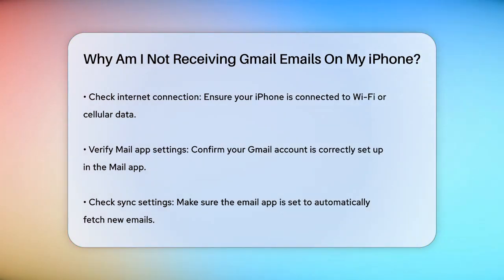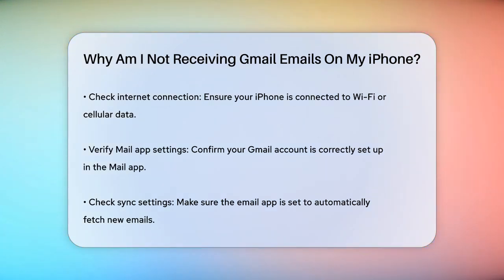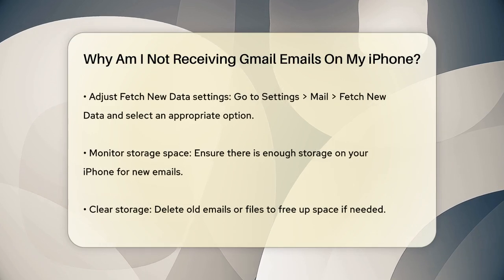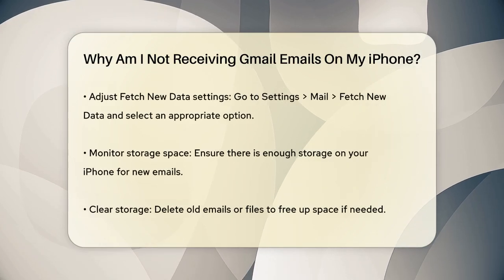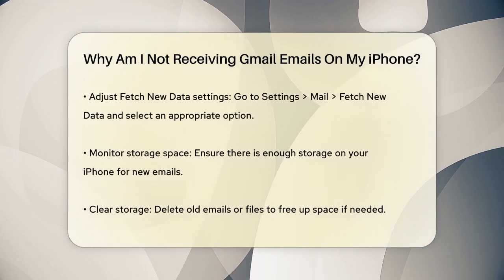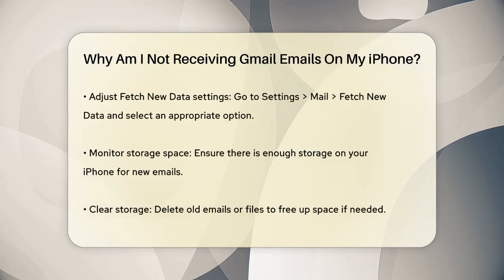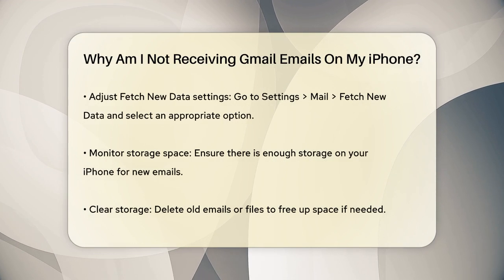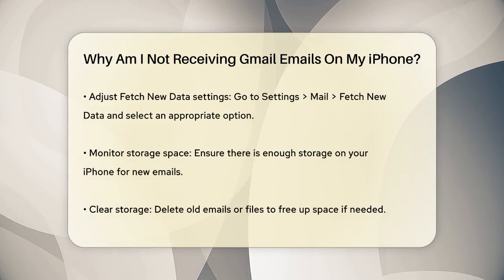If your internet is working fine, the next step is to check your Mail app settings. Ensure that your Gmail account is set up correctly in the Mail app. Go to the Settings app, scroll down, and tap on Mail. Then select your Gmail account to verify that Mail is turned on.